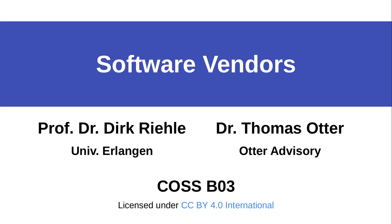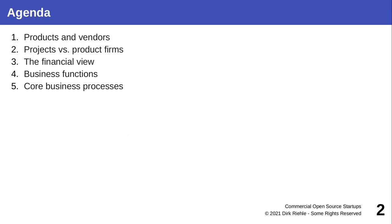We are still in the first part of three of this course, talking about the software industry. In this session I will look at how software vendors function — the difference between projects and products, a financial perspective, and the key business functions and associated core business processes of software vendors.